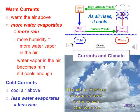Currents and climate. Warm currents typically warm the air above them, and cold currents typically cool the air above them. In addition, warm water evaporates more easily than cold water, making the air above more humid. Humid air is air with lots of water vapor in it.